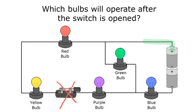Starting at one side of the battery and tracing a path to the other side, I can see that the green bulb and the blue bulb would both work because I don't have to go through the open switch for either of those.